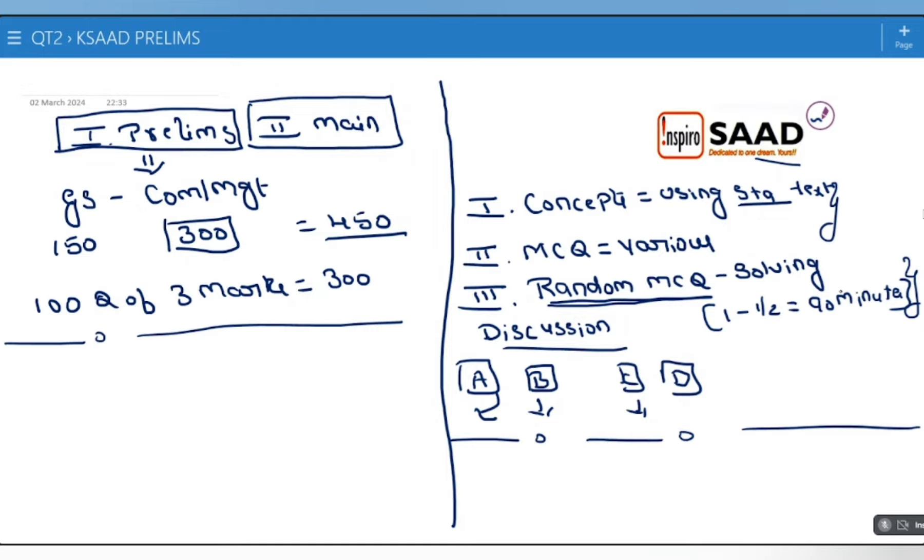What we are targeting is 70 to 80 questions. Every student who is attending should get minimum 70 to 80 questions out of 100 questions, which is 240 marks. That is our target for SAAD prelims.